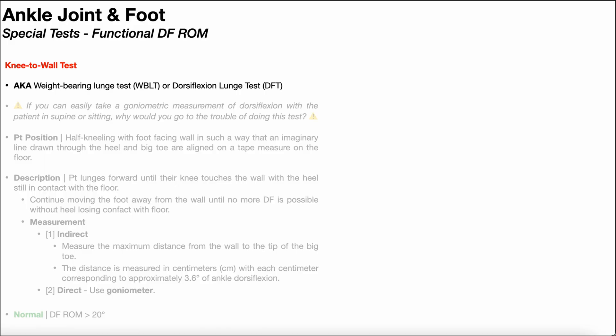In this video, we're going to be discussing the knee-to-wall test, which is a special test used in the assessment of functional dorsiflexion range of motion, particularly in the closed chain. The knee-to-wall test is also known as the weight-bearing lunge test or the dorsiflexion lunge test.